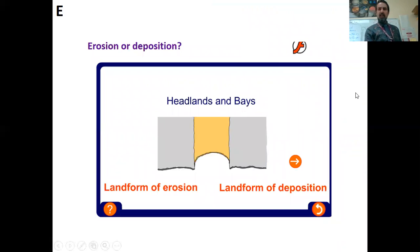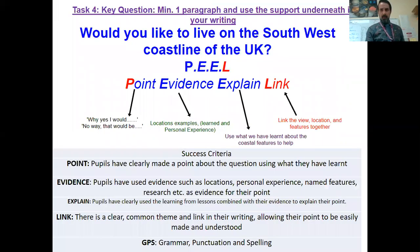And the final task is to continue a little bit longer, this one, because it's a longer written answer. Now you've gained some more understanding and learning about coastal features. Using that aspect of point, evidence, explain, and link. Key question is: would you like to live on the southwest coastline of the United Kingdom? So what's your point? Yes you would, no I wouldn't. Be forthright and direct with it. The idea of oracy and vocabulary. Evidence: location examples, the examples of features and things and aspects like that you've learned about and how you could feed into your answer. Explain: use what we've learned. And link: make sure it links together and it reads well. That's very important.